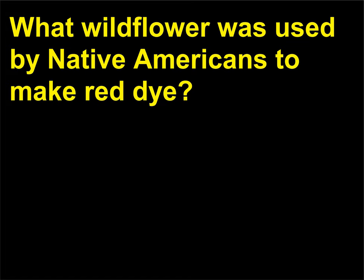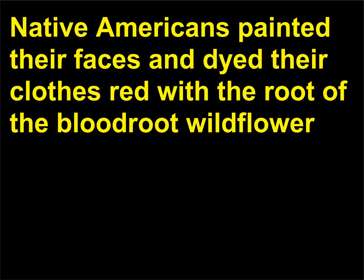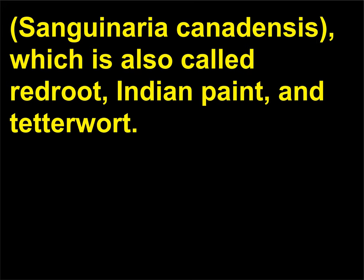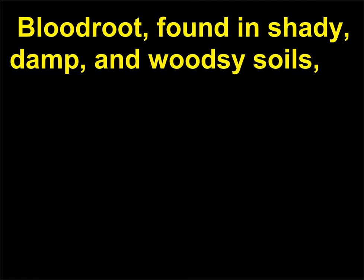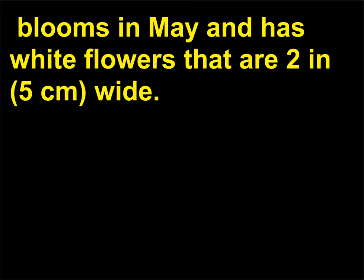What wildflower was used by Native Americans to make red dye? Native Americans painted their faces and dyed their clothes red with the root of the bloodroot wildflower, Sanguinaria canadensis, which is also called redroot, Indian paint, and tetterwort. Bloodroot, found in shady, damp, and woodsy soils, blooms in May and has white flowers that are 2 in (5 cm) wide.